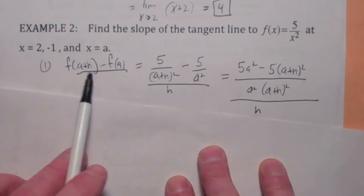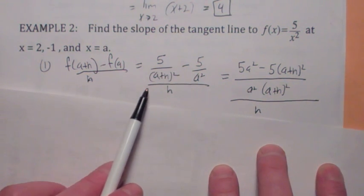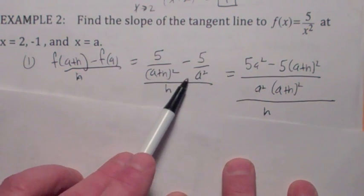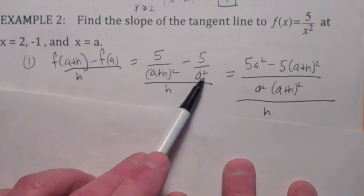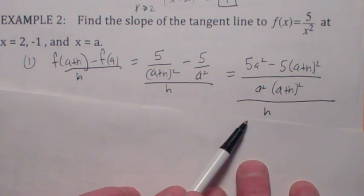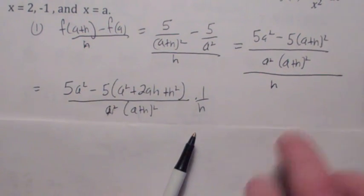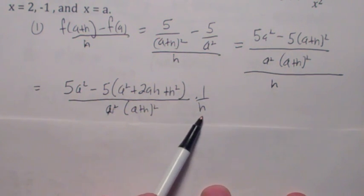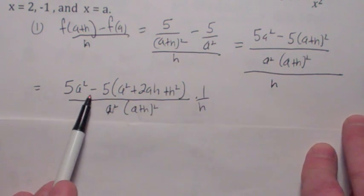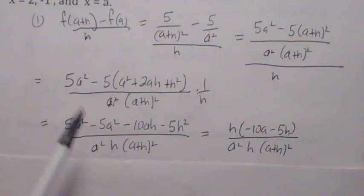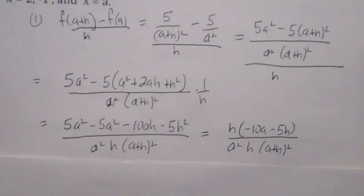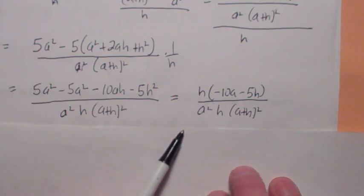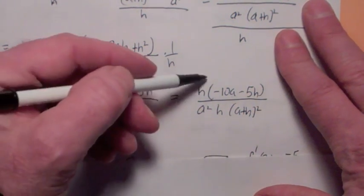So when you plug in f of a common denominator in the numerator, the common denominator is you multiply top and bottom by a squared, here you multiply top and bottom by a plus h squared, so you get this. Now, what happens when you multiply the top out carefully, this is a plus h quantity squared. Notice the h on the bottom, when you divide by h, you multiply by 1 over h. So on the next step, I'm going to carefully distribute through the negative 5, you get this. And when you cancel the 5a squares, you realize that you can now factor the h out of the top and the bottom. So once you cancel the h, you get this.